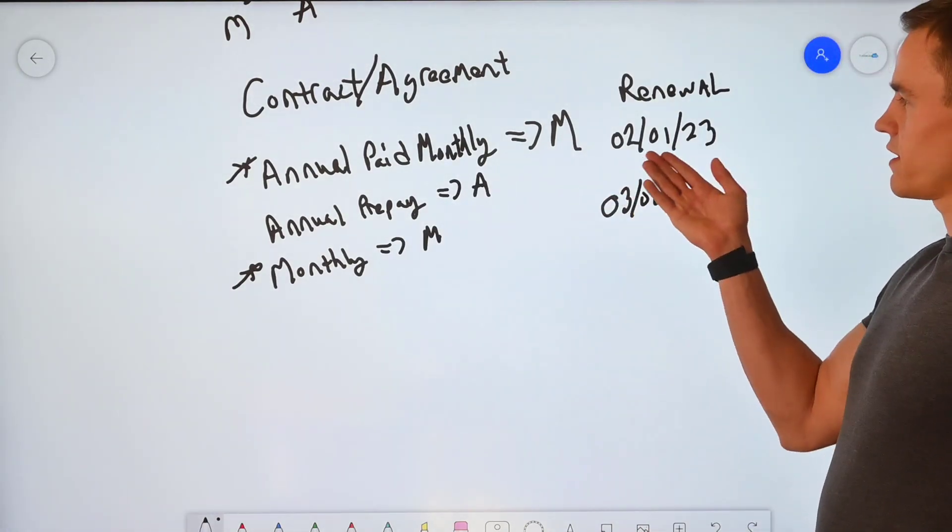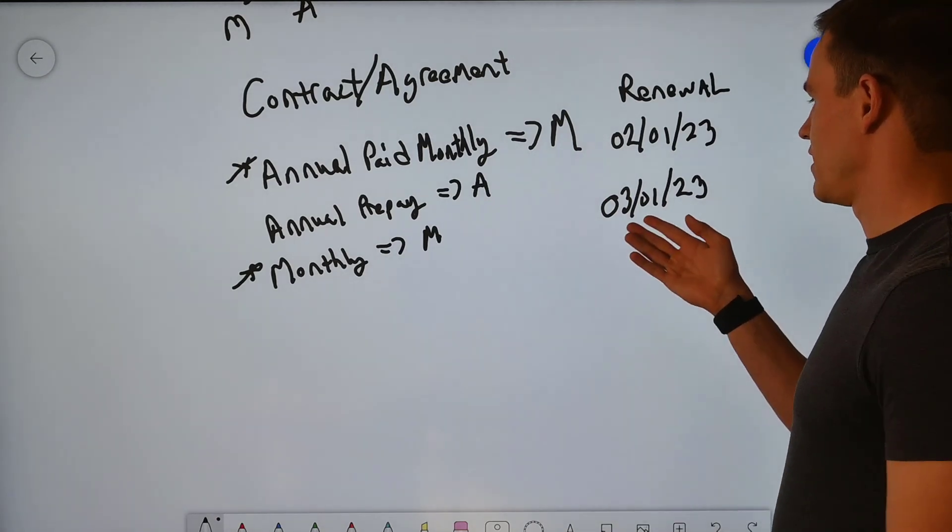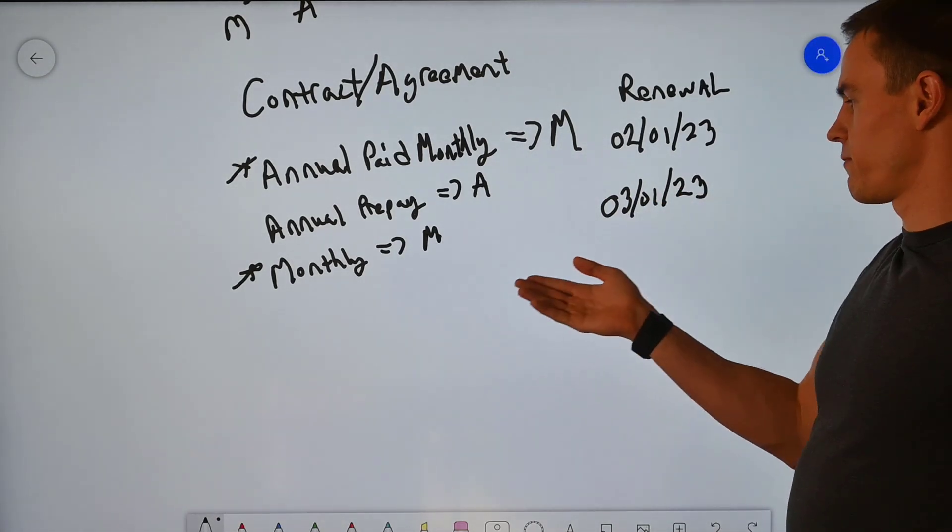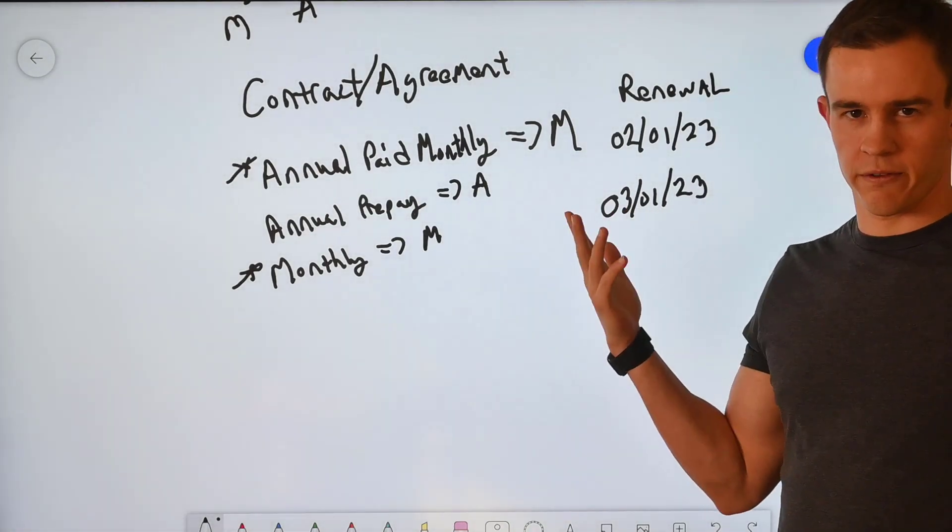And the renewal here on this one is going to be 03-01-2023. So it means I purchased this one on February 1st and my renewals next year in 2023. And it means that I purchased this one on February 1st or upgraded on February 1st and my renewal is a month from now, so on 3-01.